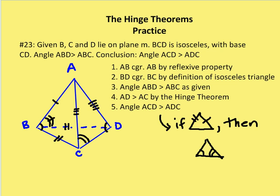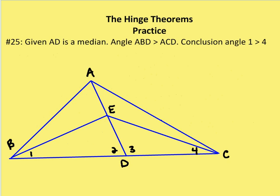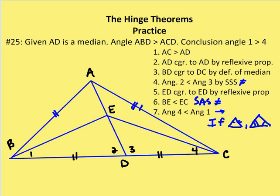Moving on to the last question, number 25: given AD is a median and angle ABD is greater than ACD, conclusion — angle one is greater than angle four. We've got a lot of triangles in this diagram, so mark up the diagram and work it out from what you know. AD is a median, so BD by definition is congruent to DC.